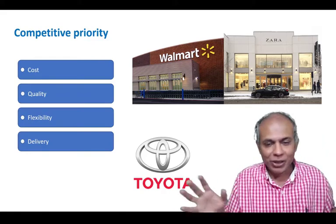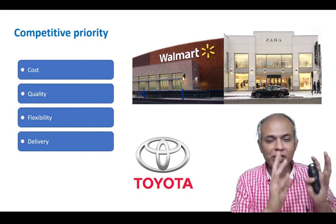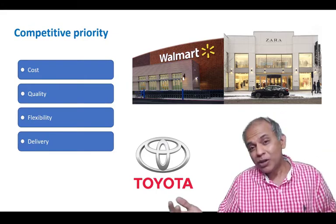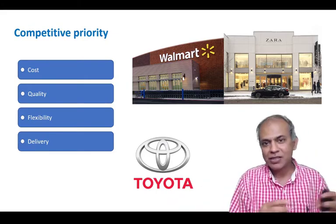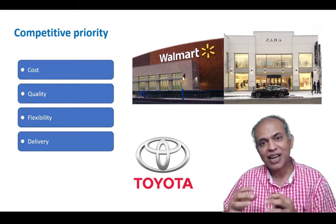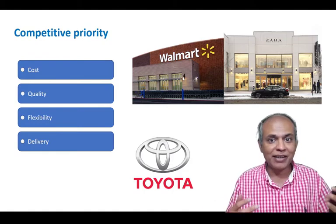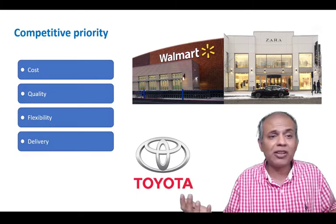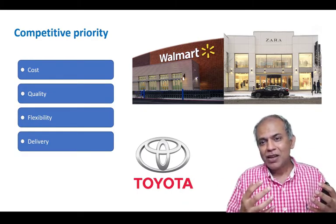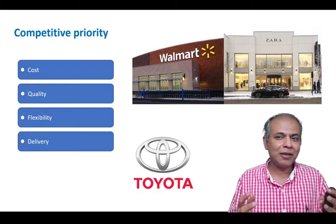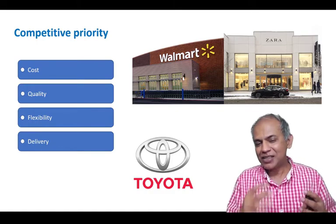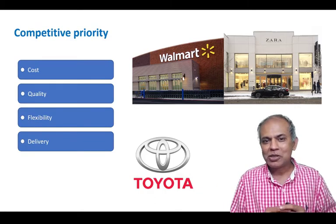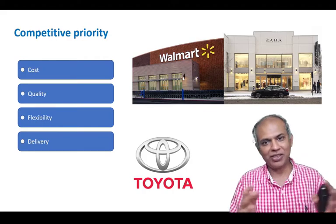The point of this video is to explain these four competitive priorities and present two views: the trade-off view, which is dominant, saying that businesses have to choose and supply chains must be designed based on those choices; and the Toyota view, which is the complementarity or sand cone model, saying that firms can achieve all different kinds of priorities simultaneously. My view is that Toyota is a special case. In most cases, we have a trade-off, and we will talk more about Toyota's special case in a chapter on lean manufacturing.